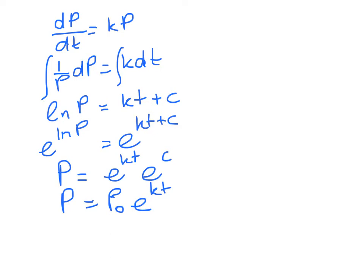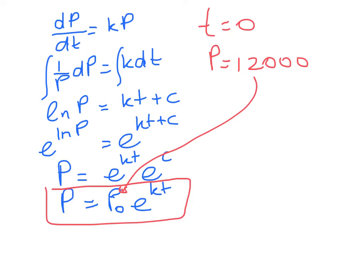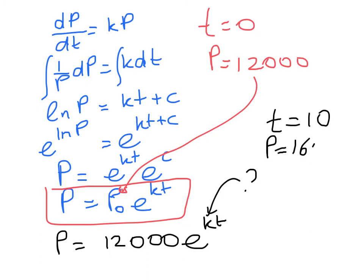So now it's time to look at what information we've got in the question. So this is my general form. And we know that when T equals 0, P is equal to 12,000. So that means that my P₀ will be 12,000. And we're going to have P is equal to 12,000 E to the Kt. So the next thing I have to do is work out what is K. To do that, I use my next bit of information, which is that when T is 10, so 10 years on, which I think is in 2010, we have a population in the town of 16,000.